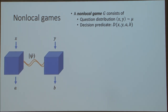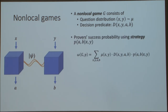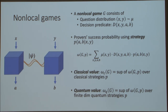The CHSH game is one example of something more general: a nonlocal game. In general, x and y don't have to be bits or independent, and answers can be non-binary with more general decision predicates. A nonlocal game consists of some way of sampling questions x and y and a decision predicate determining when the provers succeed. The value of the game depends on what type of correlations you optimize over — classical value optimizes over classical correlations, quantum value over finite-dimensional quantum strategies.